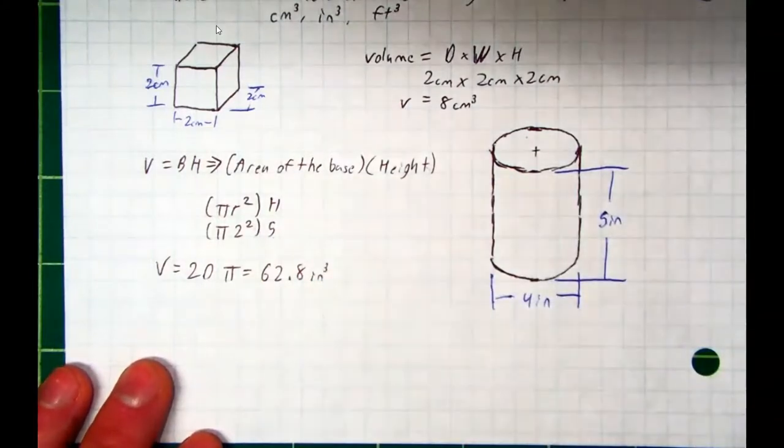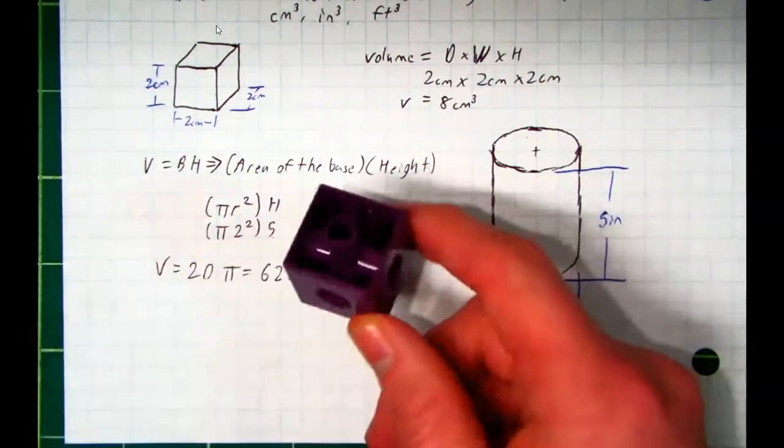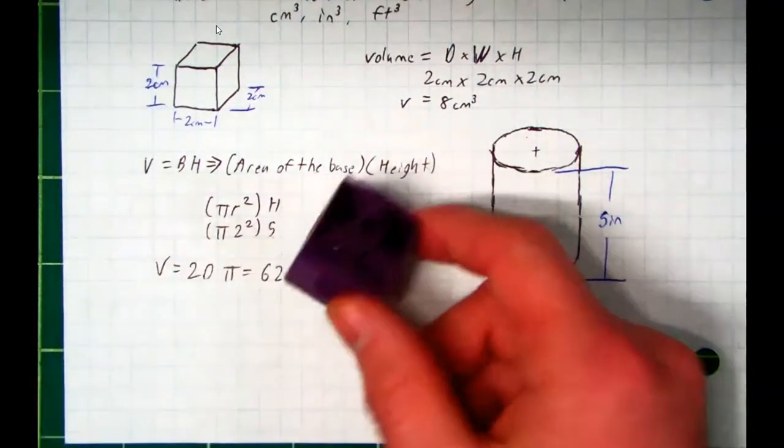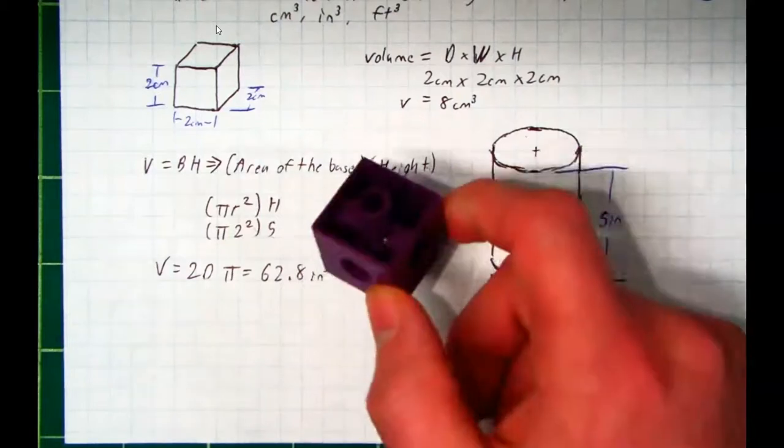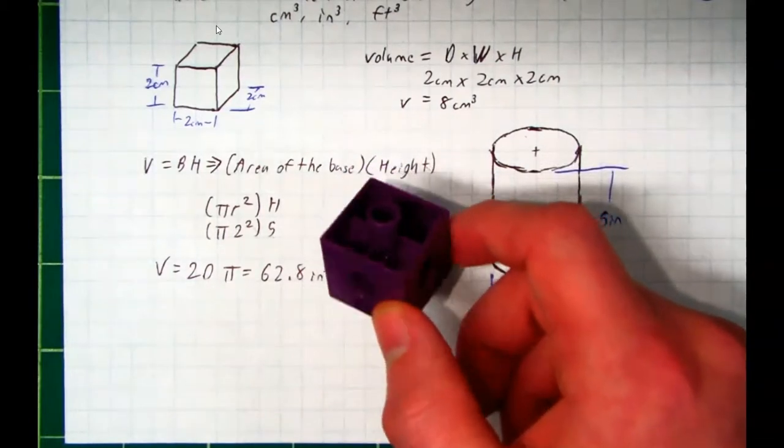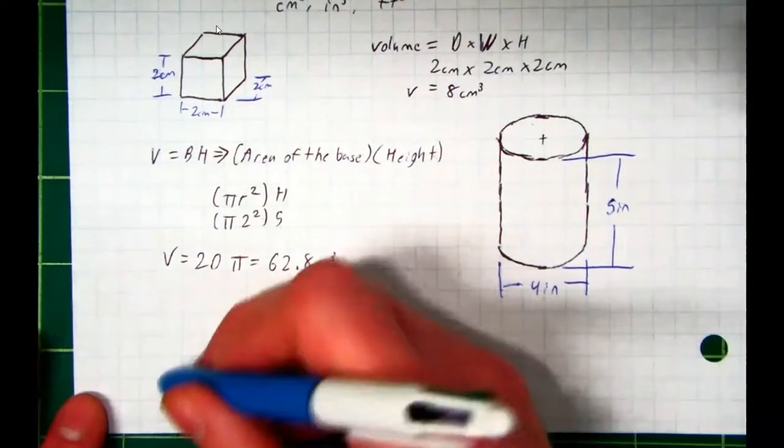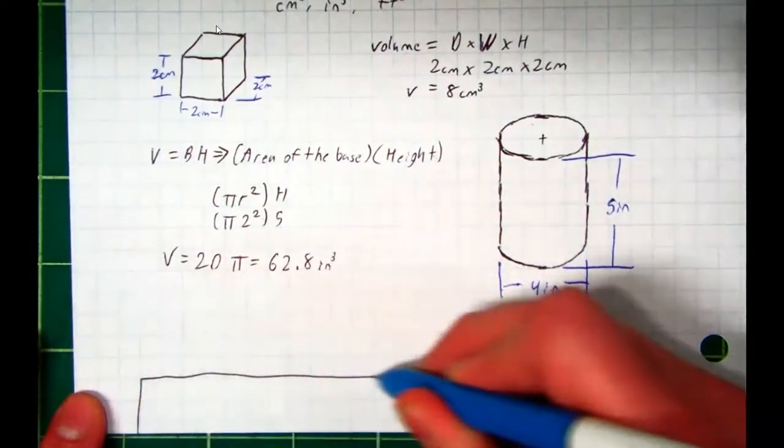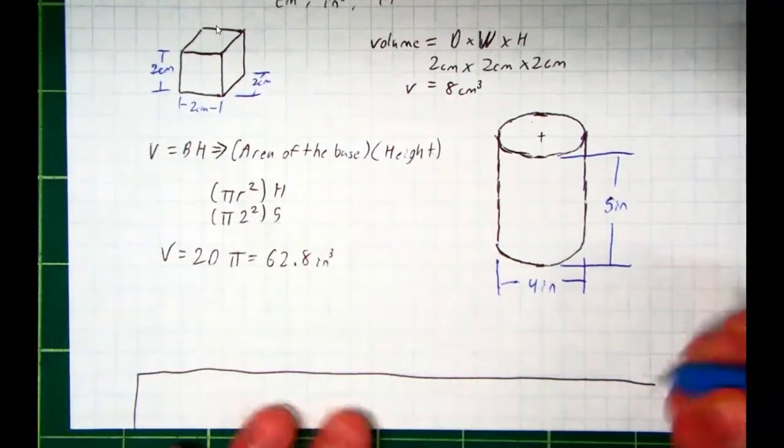So what does that mean? I mean, this cylinder takes up about the same amount of space as if I stacked 62 of these cubic inches. They take up the same amount of space.